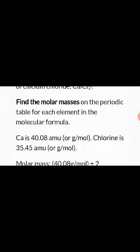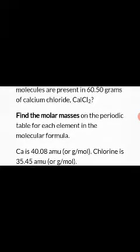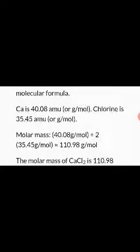Calcium has an atomic mass of 40.08 amu, and chlorine has an atomic mass of 35.45 amu. Since there are two chlorine atoms in CaCl₂, multiply 35.45 by two to get 70.90. Adding calcium's 40.08 gives a total molar mass of 110.98 g/mol — this is the mass of one mole of calcium chloride.